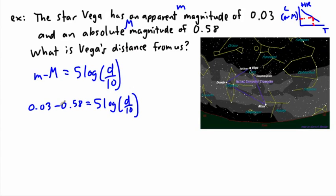0.03 minus 0.58, that's going to be negative 0.55. That'll equal 5 log of d over 10. I've just calculated this minus this. Well, then I want to get d by itself, so I have to do some algebra. I'm first going to get rid of the 5. If I divide both sides of the equation by 5, then I'll get negative 0.55 divided by 5, that'll give me negative 0.11 equals log of d over 10.